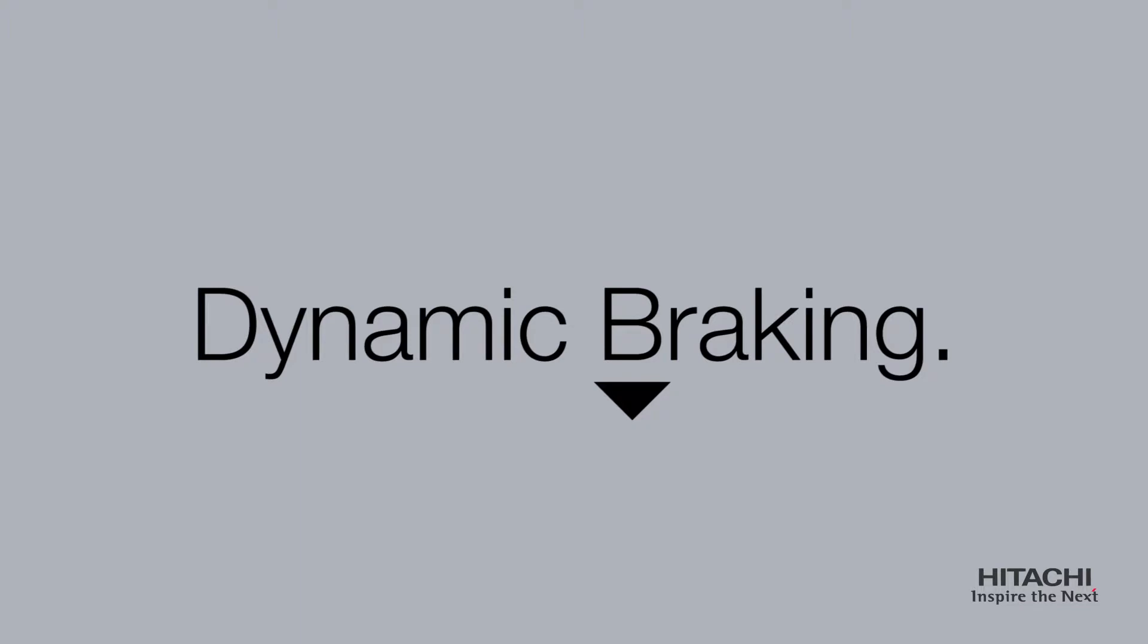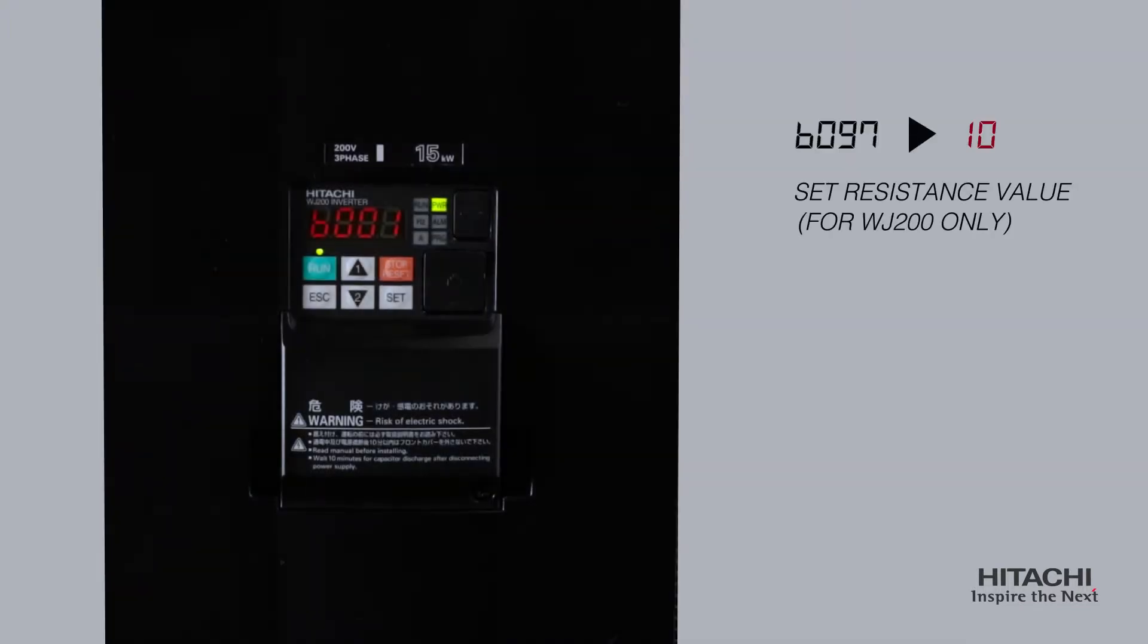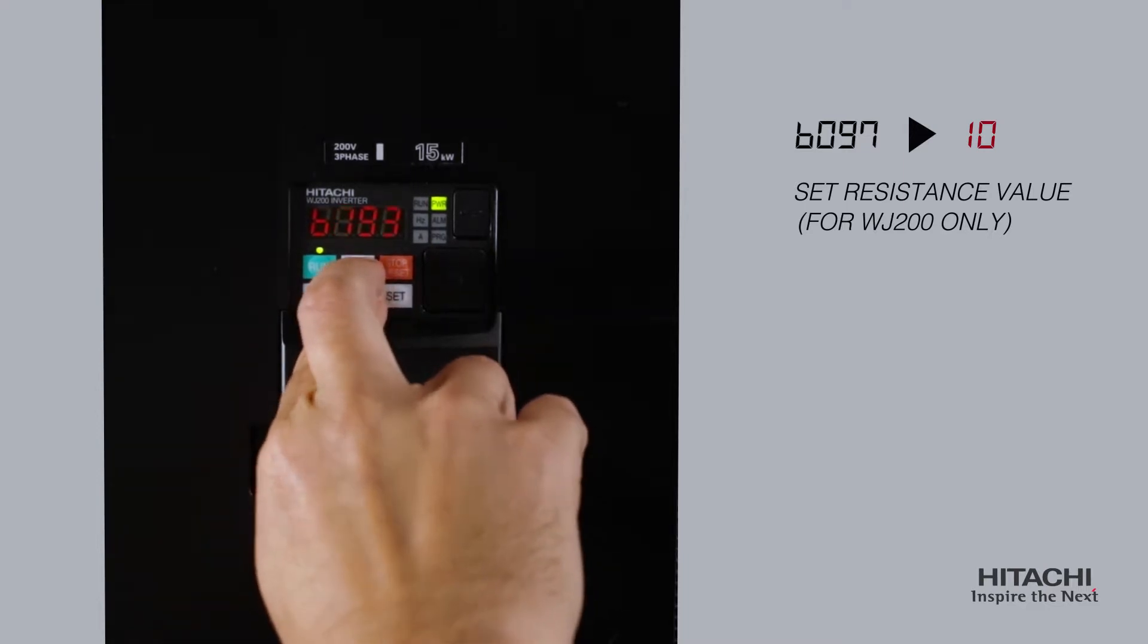To enable dynamic braking, enter the resistance value in B97. This is for the WJ200 only.